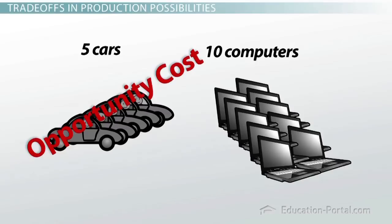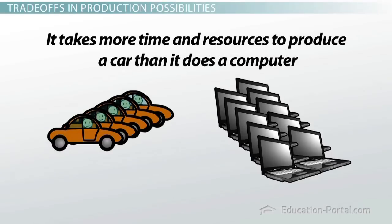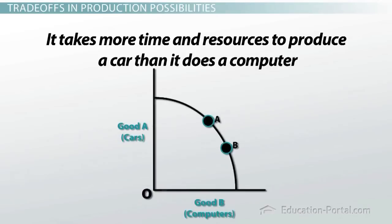By reducing this fraction down, we can say the opportunity cost of producing one car is two computers. As you can see, it takes more time and resources to produce a car than it does a computer. And the production possibilities model will show us this visually.